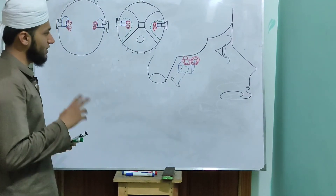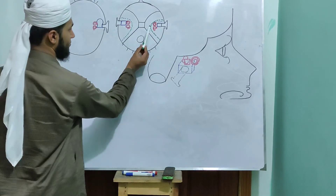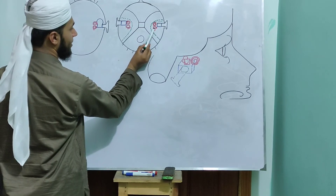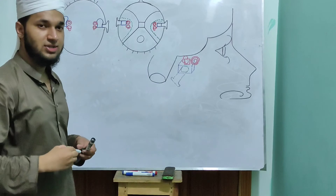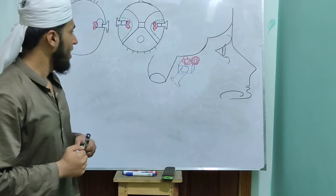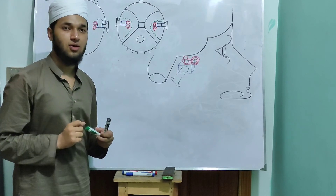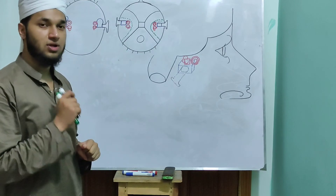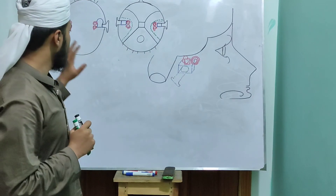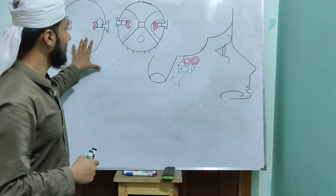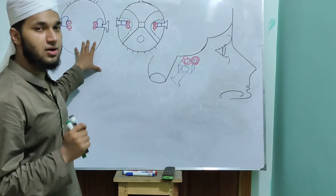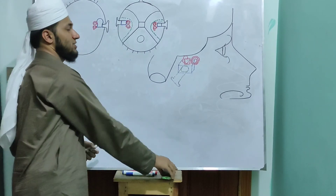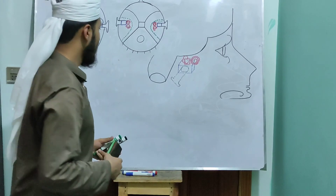The internal ear has two parts. One part is the cochlea and the other part is the vestibular apparatus. The vestibular apparatus consists of the vestibule and semicircular canals. The cochlea is the organ for hearing. The vestibular apparatus is the organ for equilibrium and balance. So, to summarize: the internal ear is situated in the petrous part of the temporal bone, medial to the middle ear, and it contains sensory organs for hearing and equilibrium.